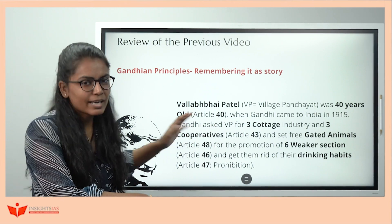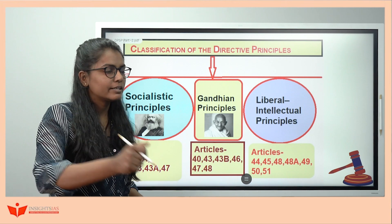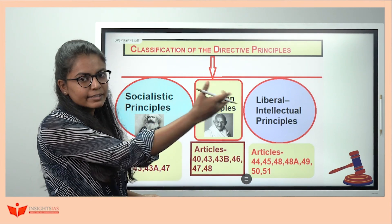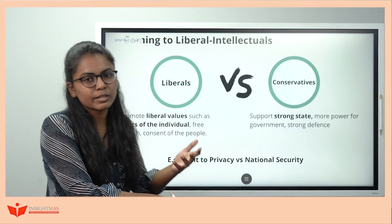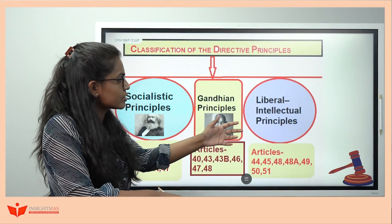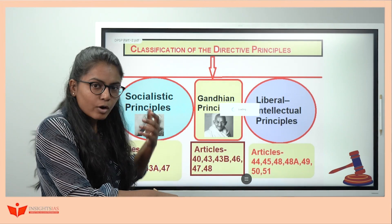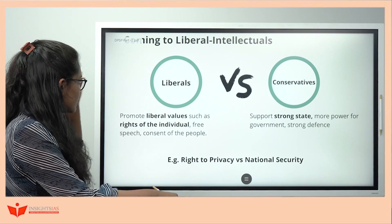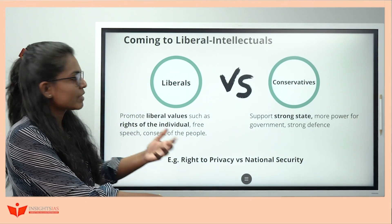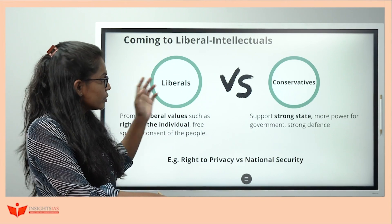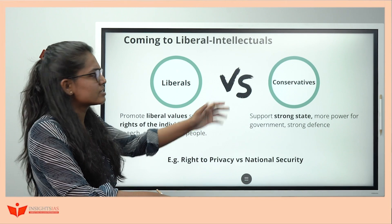Now let's start with Liberal Intellectual principles. We divided Liberal Intellectual into several articles. Let's first understand the logic: liberals promote liberal values — rights, free speech. Opposite to them are conservatives who want a strong state and strong defense.